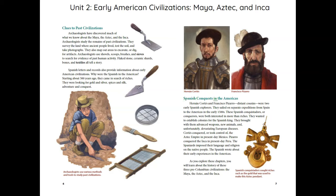Spanish conquests in the Americas: Hernán Cortés and Francisco Pizarro, distant cousins, were two early Spanish explorers. They sailed on separate expeditions from Spain to the Americas in the early 1500s. These Spanish conquistadors, or conquerors, were both interested in more than riches. They wanted to establish colonies for the Spanish king. They brought with them advanced weapons, new animals, and, unfortunately, devastating European diseases.